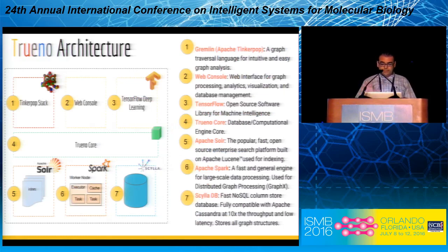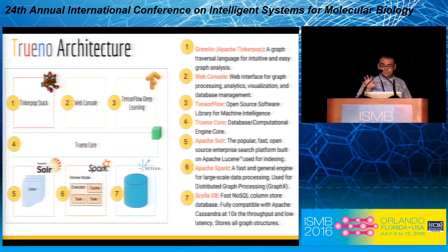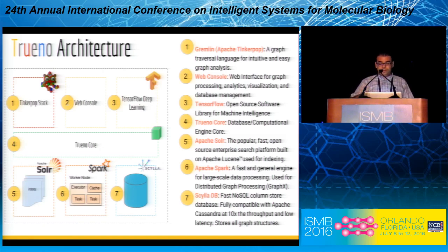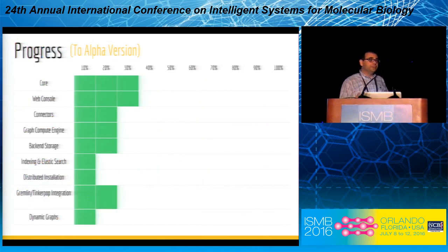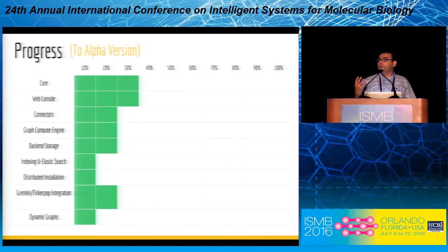The architecture is based on a combination of ScyllaDB for storage, Spark for distributed processing, and Solr for indexing. The Trano core code is implemented on top of them and interacts with the existing graph querying language TinkerPop, a web console we are developing, and machine learning frameworks like TensorFlow. This is still work in progress, and I present it to ask for community input. Now I want to use the remaining time to give a more solid example of how we are supporting this system with theoretically grounded algorithms.